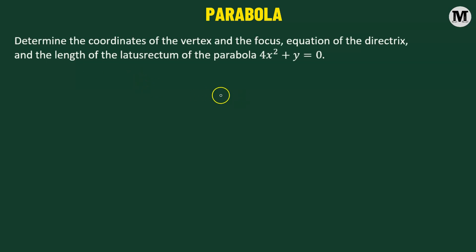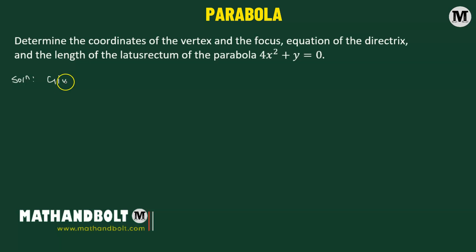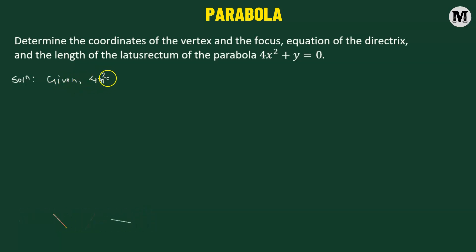Determine the coordinates of the vertex and the focus, the equation of the directrix, and the length of the latus rectum of the parabola 4x squared plus y equals zero. Let us begin. Here we have the equation of the parabola given to us: 4x squared plus y equals zero.